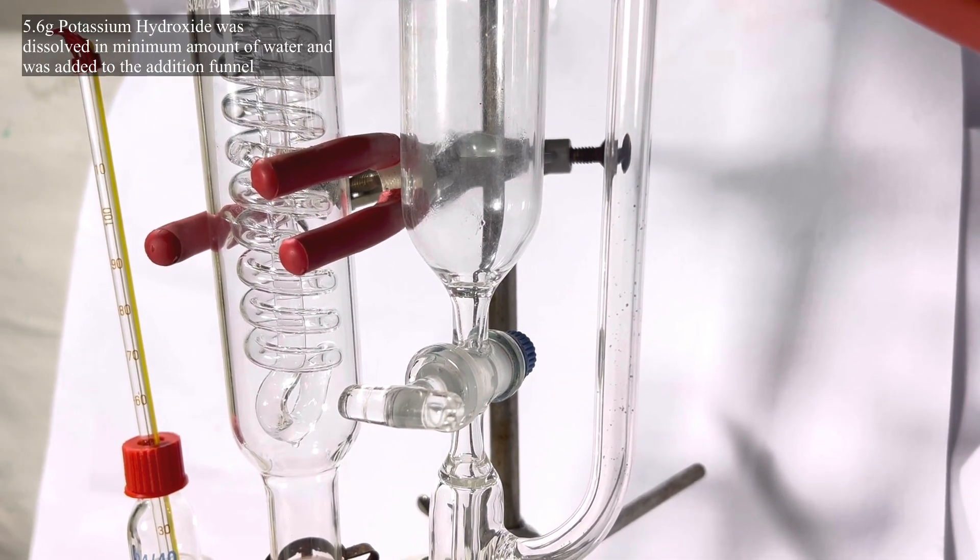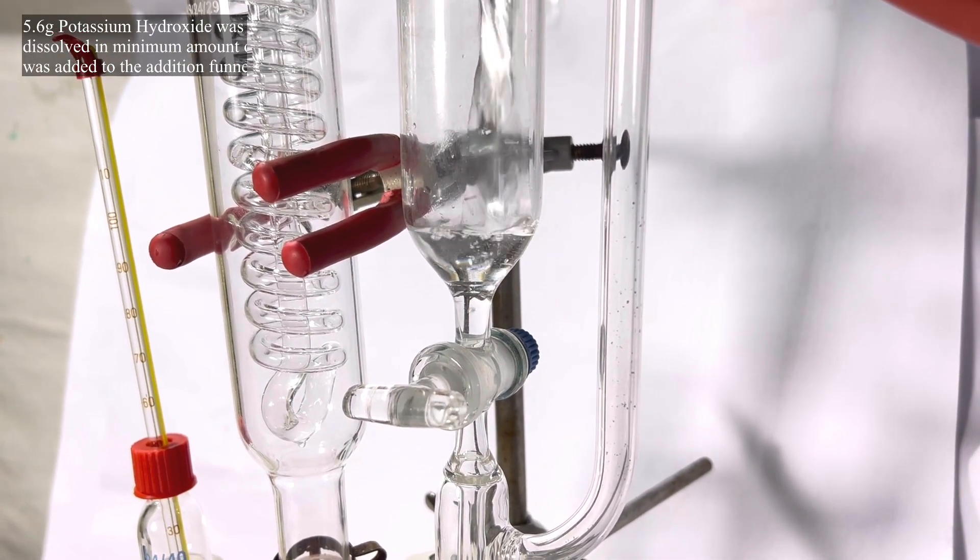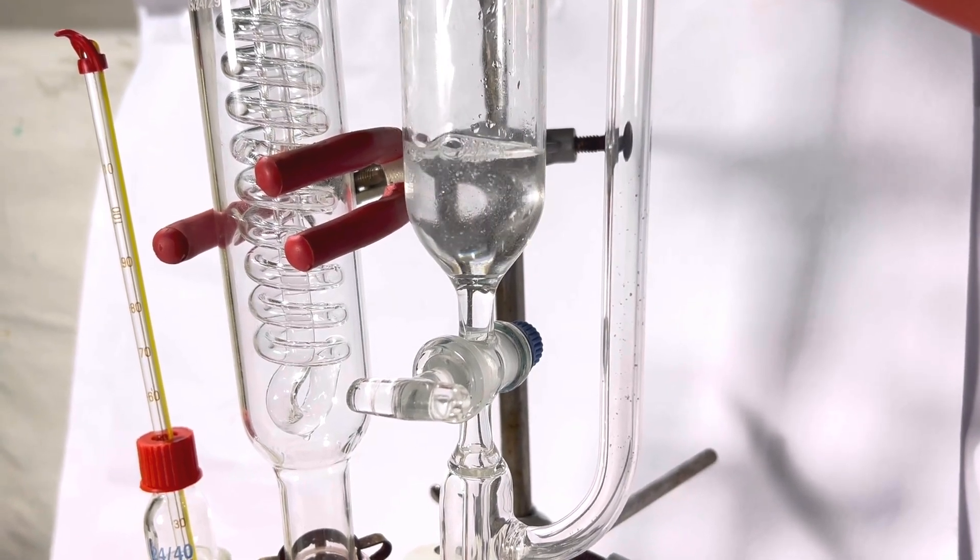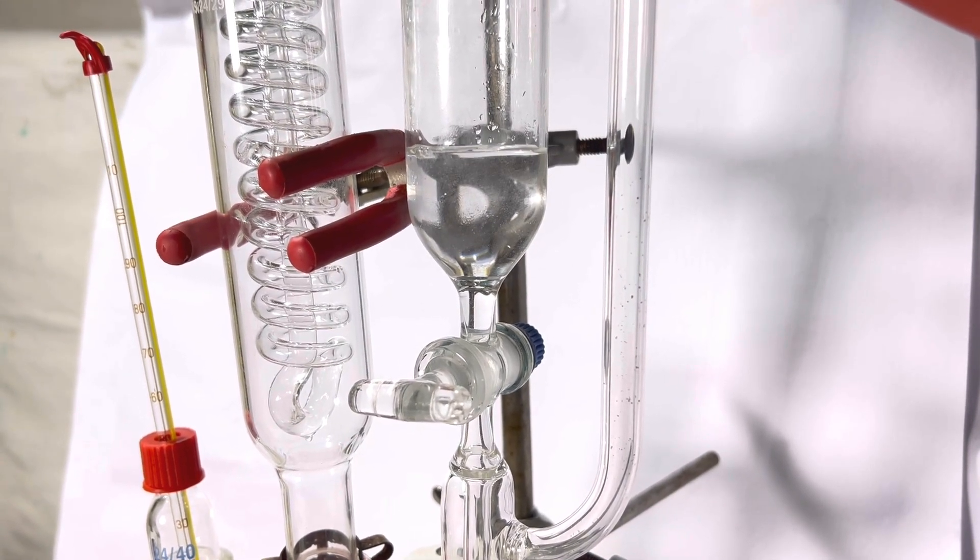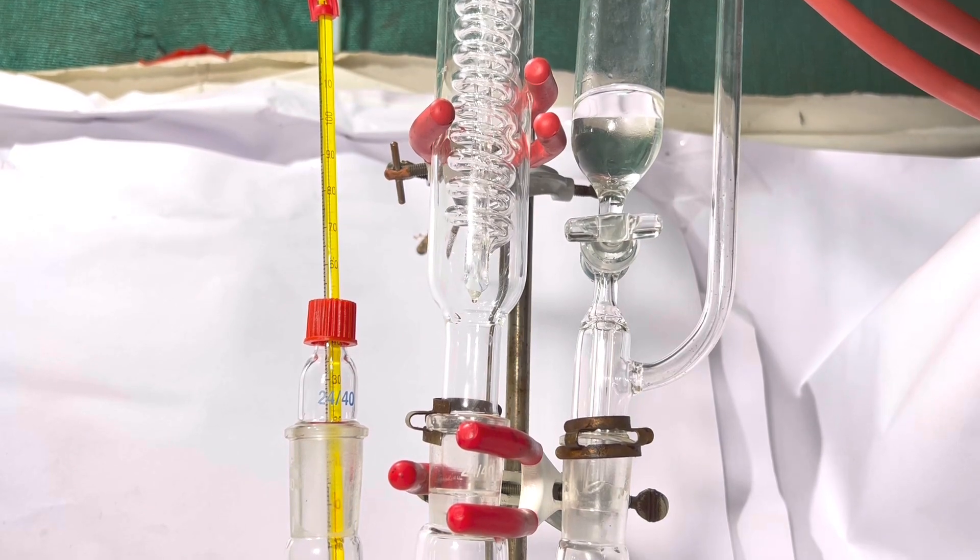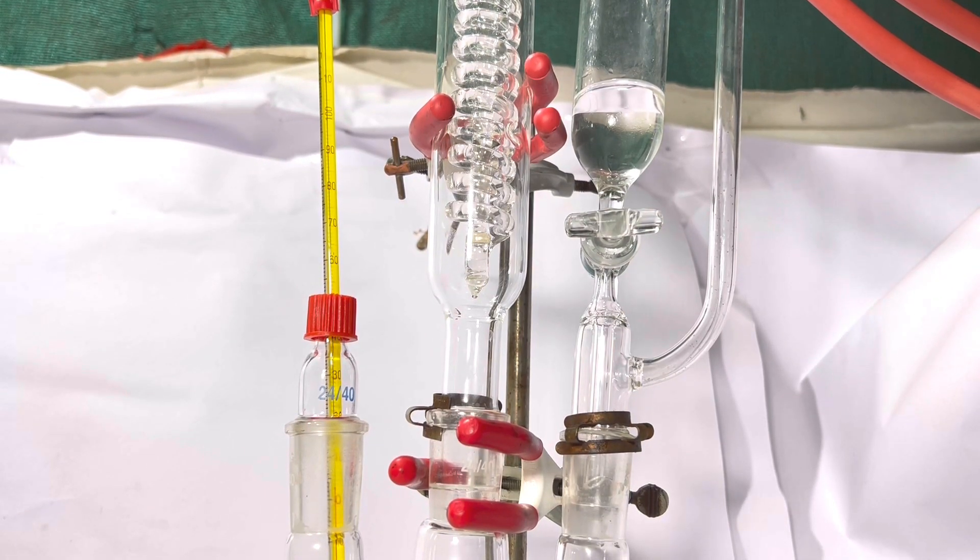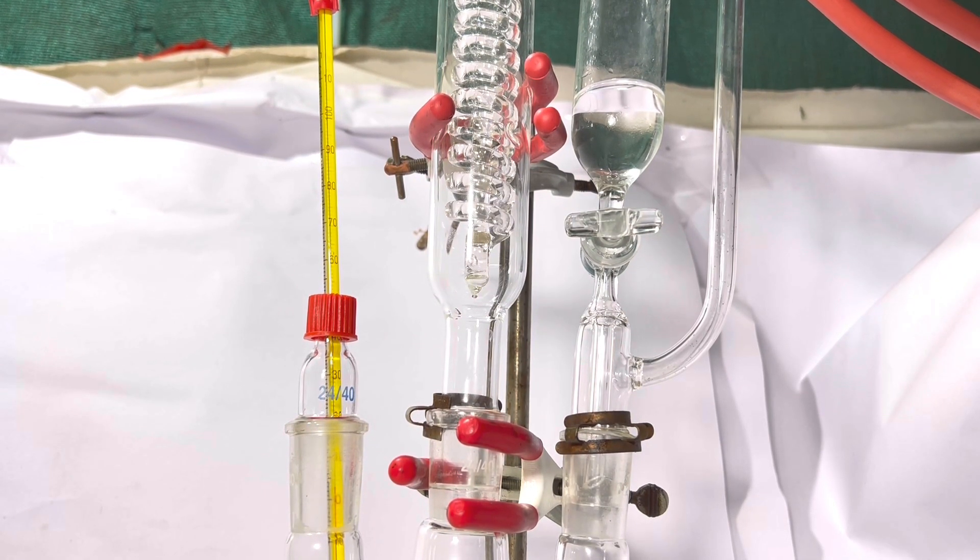Now a solution of 5.6 grams of potassium hydroxide dissolved in minimum amount of distilled water was added to the addition funnel. The reflux was then turned on and lots of ice crystals were dumped into the water reservoir to chill the condenser.